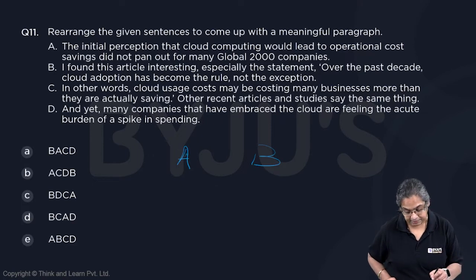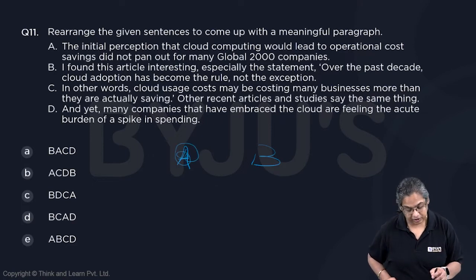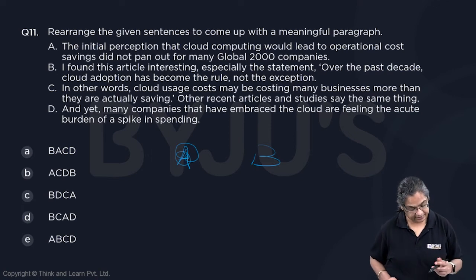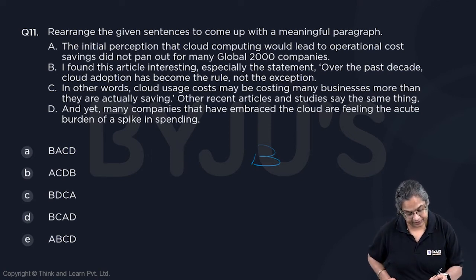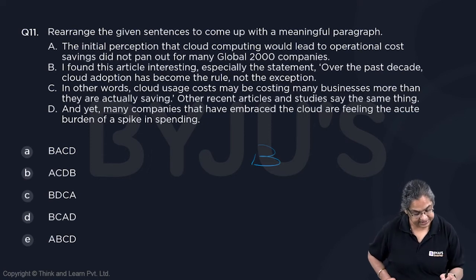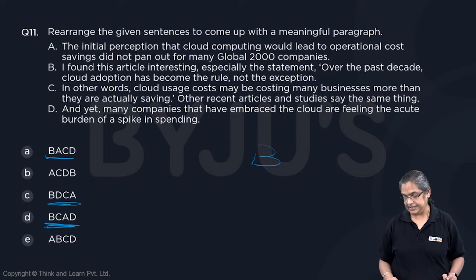B looks like a better option than A. Let's now see the options — B,A,C,D; B,D,C,A; B,C,B,A,D; A,D. We'll work through these.